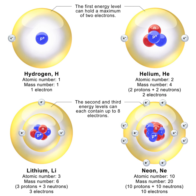The nucleus of the most common isotope of the hydrogen atom with the chemical symbol 1H is a lone proton. The nuclei of the heavy hydrogen isotopes deuterium and tritium contain one proton bound to one and two neutrons, respectively. All other types of atomic nuclei are composed of two or more protons and various numbers of neutrons. The most common nuclide of lead has 82 protons and 126 neutrons, for example.